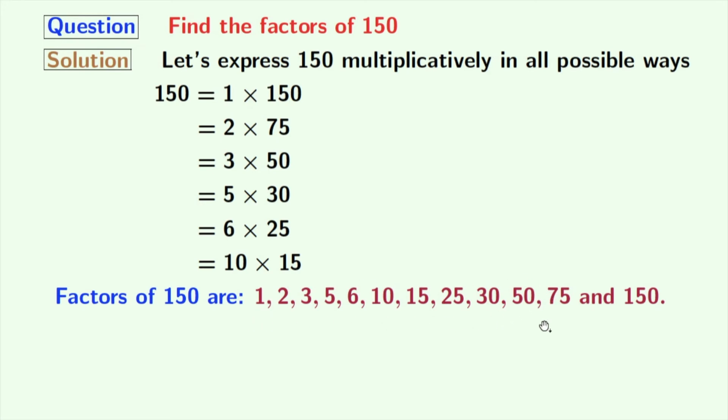Now, if we look at these factors, we can see that 2, 3 and 5 among these numbers are prime numbers because these 3 numbers do not have any divisor other than 1 and that number itself. So, we can say that the prime factors of 150 are 2, 3 and 5.